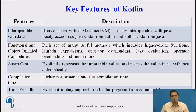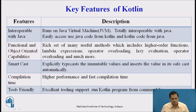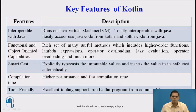Next, interoperable with Java. Kotlin runs on the Java Virtual Machine, that is JVM, so it is totally interoperable with Java. We can easily access and use Java code from Kotlin and Kotlin code from Java. Functional and object-oriented capabilities: Kotlin has a rich set of useful methods which include higher-order functions, lambda expressions, operator overloading, lazy evaluation and much more. A higher-order function is a function which accepts a function as a parameter, or returns a function, or can do both.